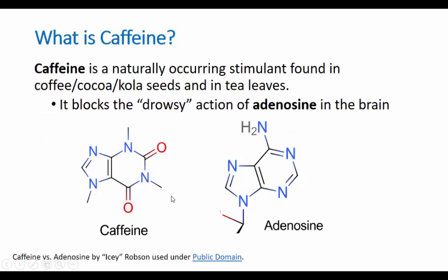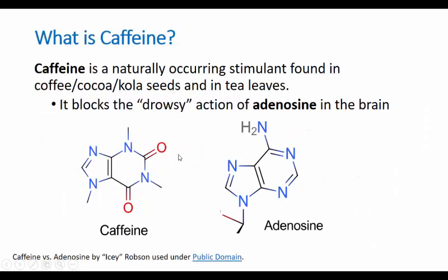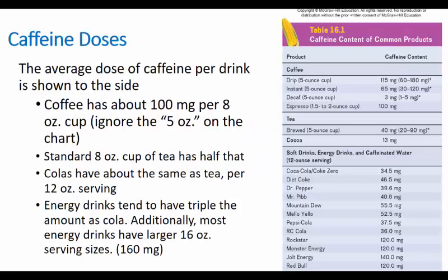A little history on cola: cola seeds — the cola nut — are the source of caffeine in Coca-Cola and are still used today as part of its flavoring. The original Coca-Cola recipe included the cola nut, cocaine leaves — so cocaine was in there — and a whole bunch of sugar to make it taste better. It was originally not a sparkling drink.